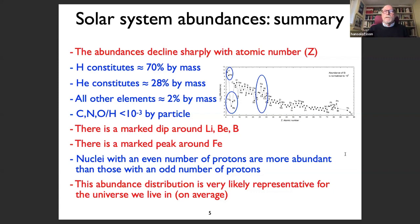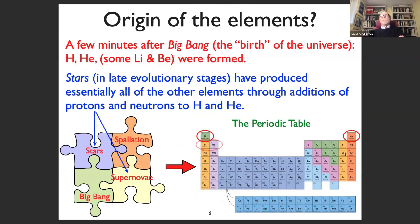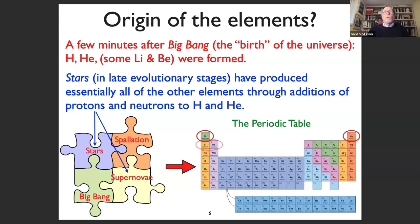The question is: what is the origin of the elements? The first idea was that they must have formed in the very young universe shortly after the Big Bang. It turned out that was not correct — only hydrogen and helium were able to form at reasonable abundances in the very early universe. Essentially all elements in the periodic table were produced in stars, with a few other processes contributing. This lecture will be dominated by how stars form the elements.